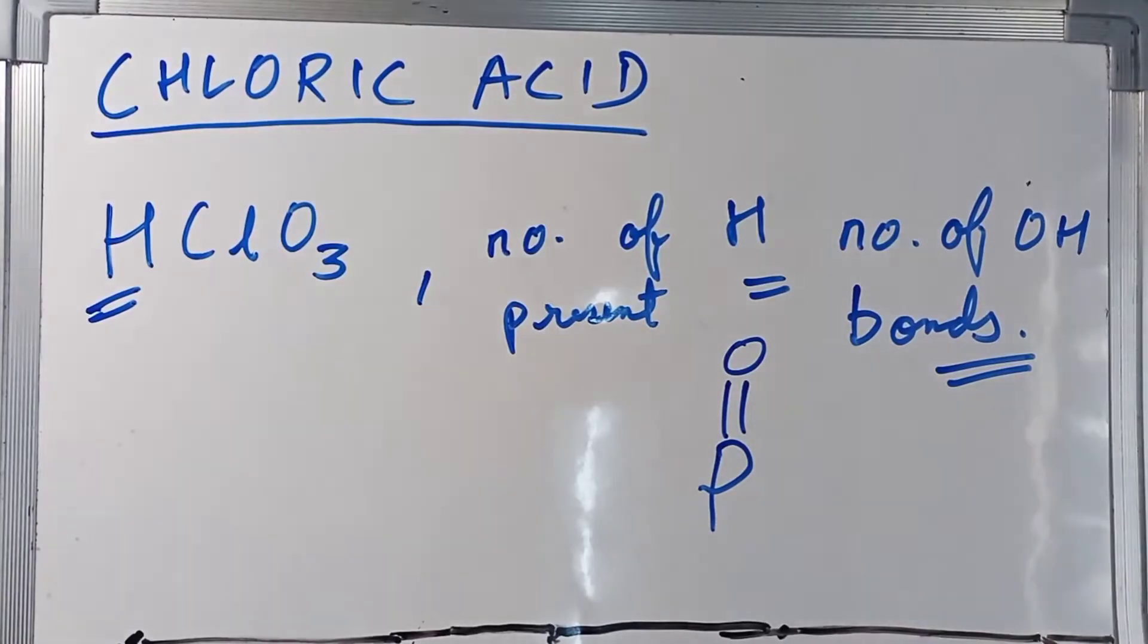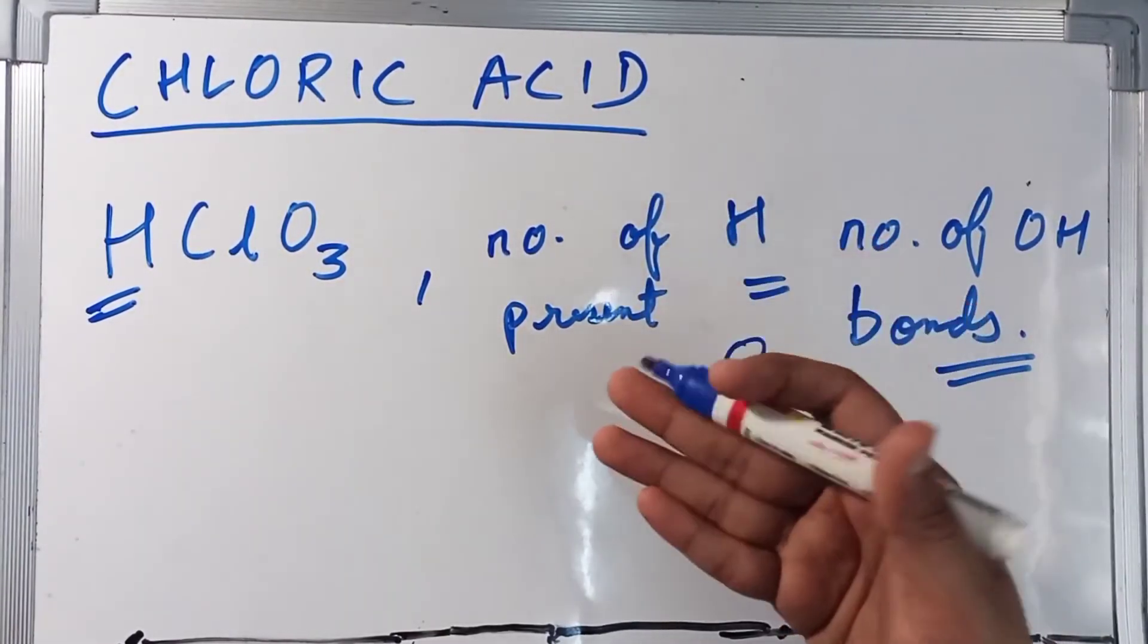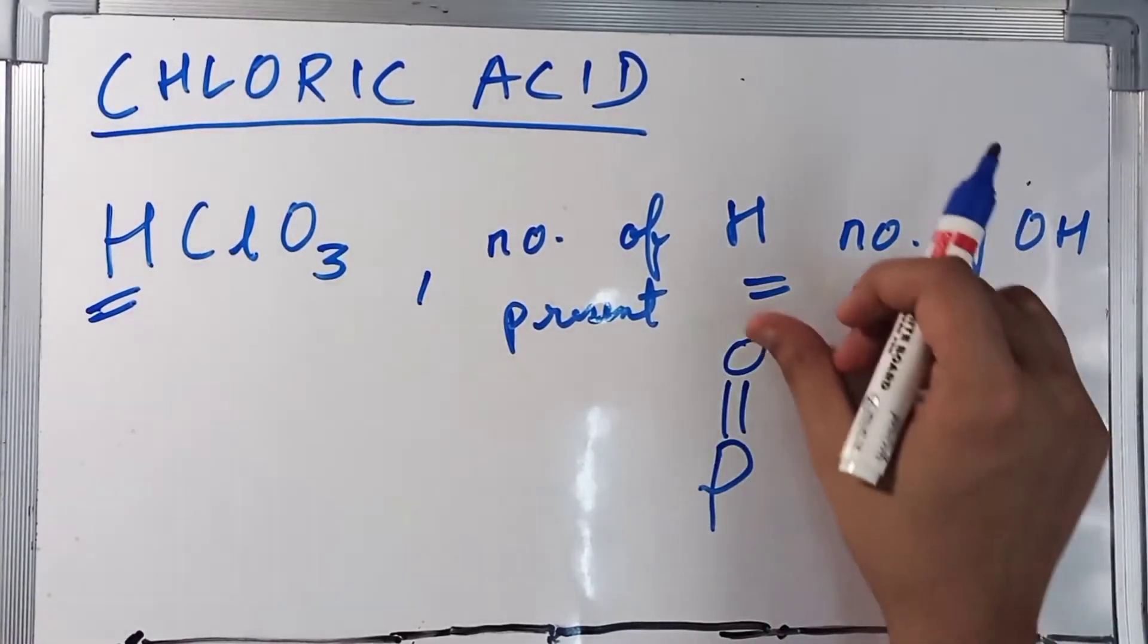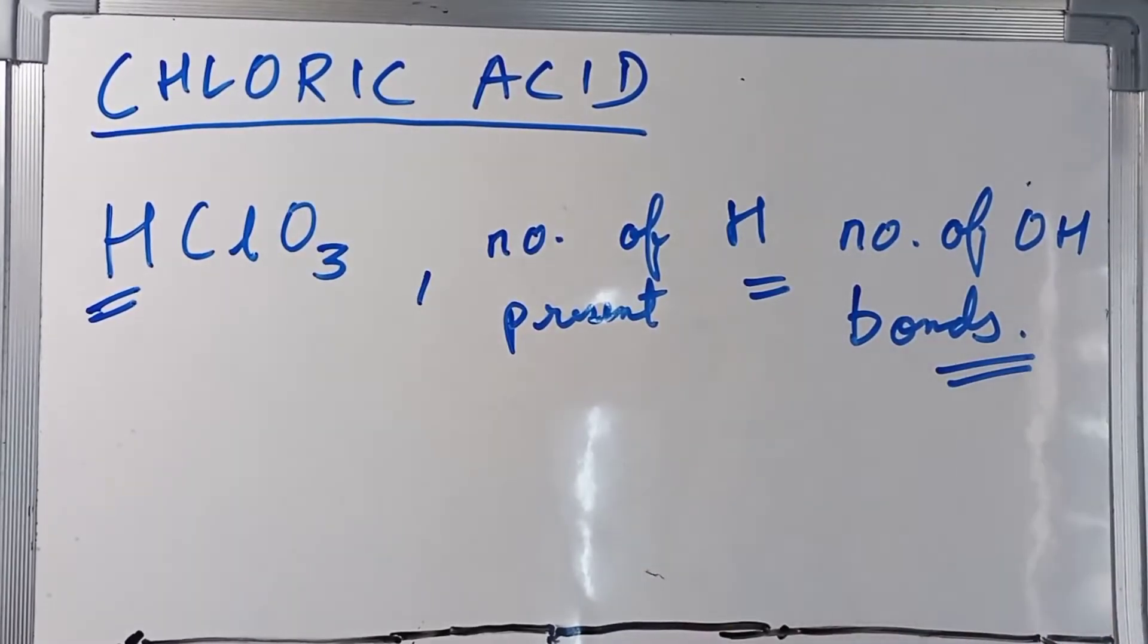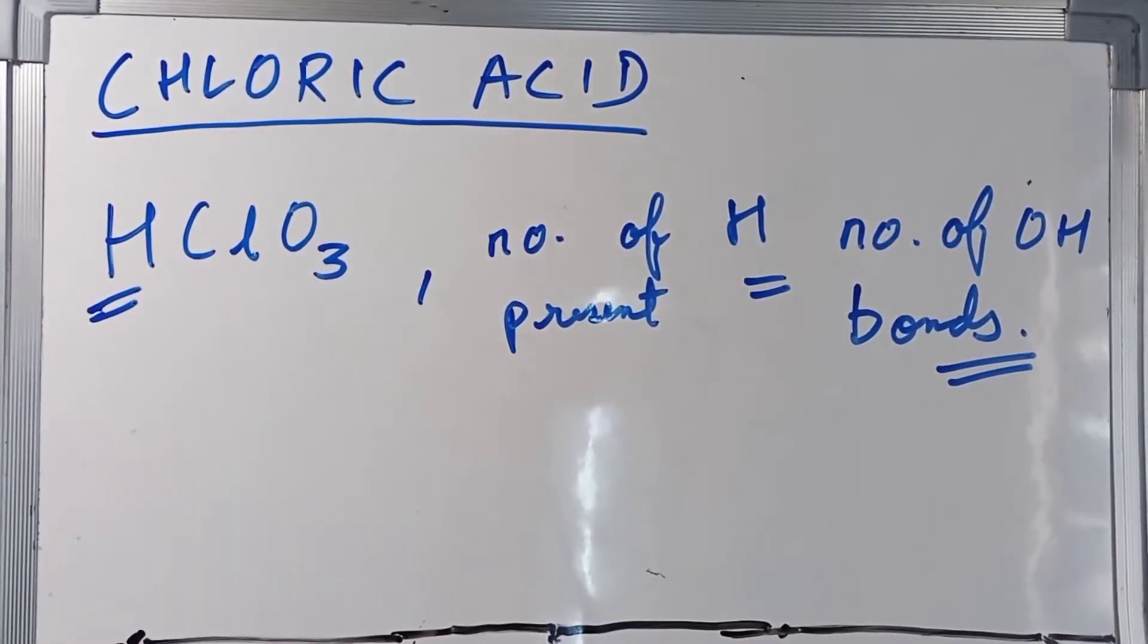But in normal acids, in sulfur acids, in chlorine acids, the number of hydrogen atoms present is equal to number of OH bonds. So let's draw now.